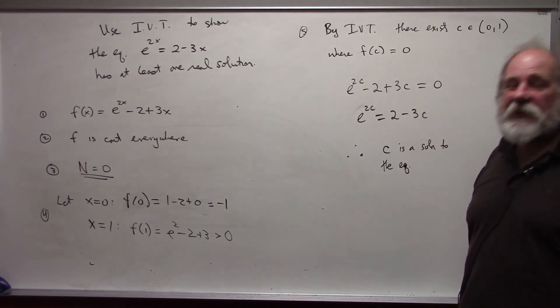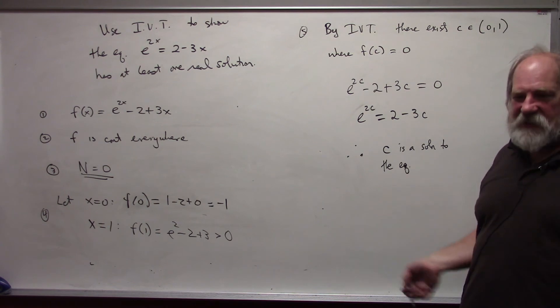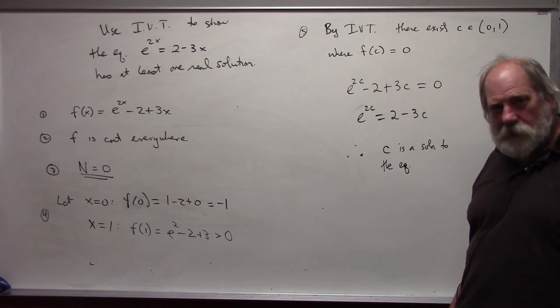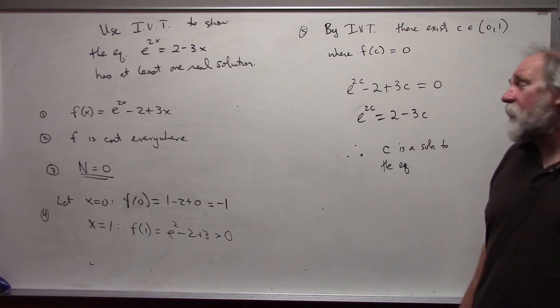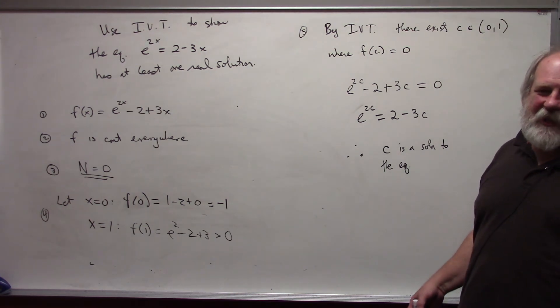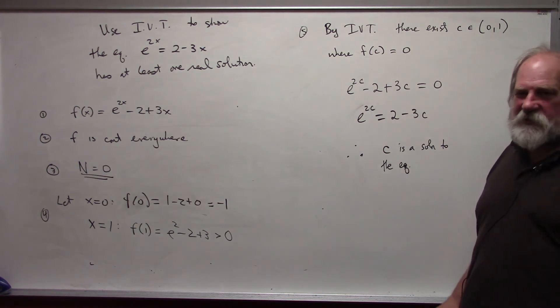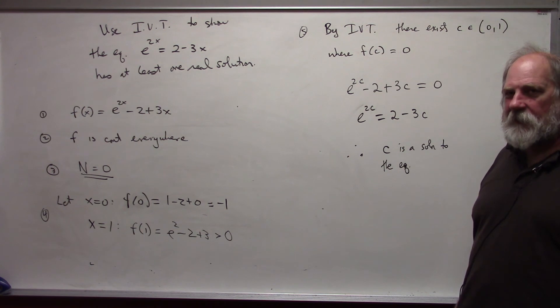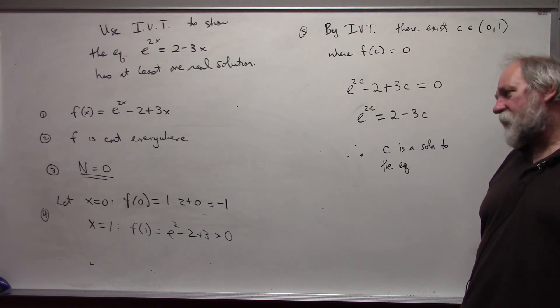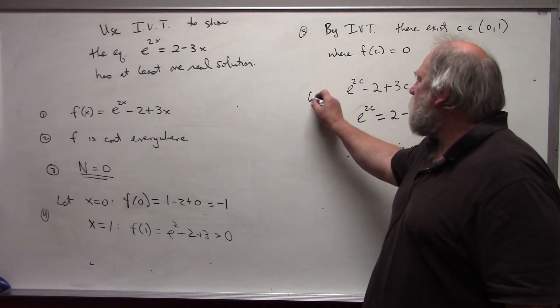Notice, all this shows is that a solution exists. It doesn't tell me what the value is. It leaves you with a sort of bad taste in your mouth at the end. But understand, value theorems are existence theorems. They just show that something exists. It doesn't tell us what the value is. Okay, this would be my sixth step, by the way.